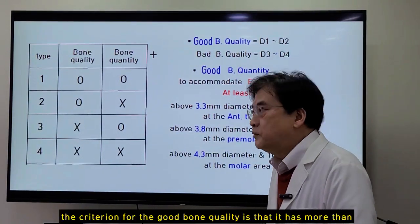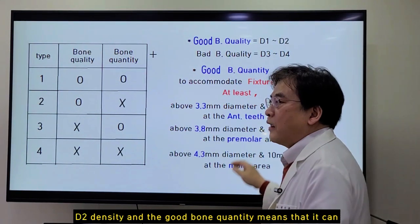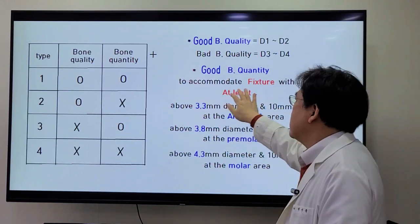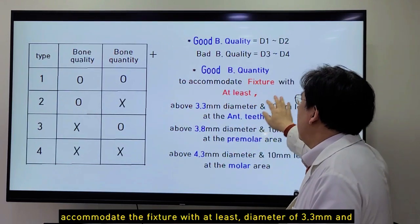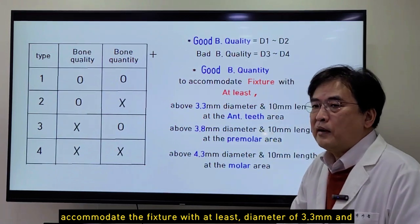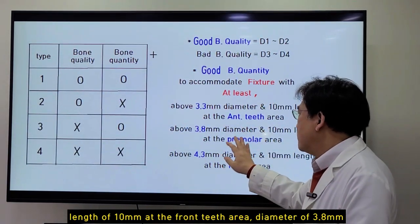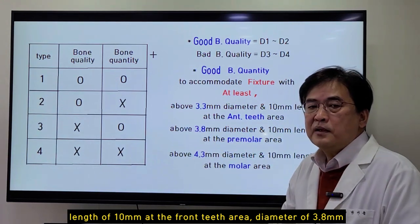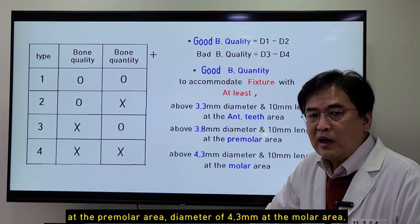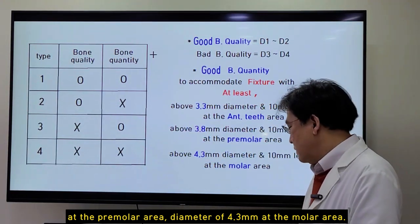The criterion for good bone quality is that it has more than D2 density, and good bone quantity means that it can accommodate the fixture with at least a diameter of 3.3 mm and length of 10 mm at the anterior area, diameter of 3.8 mm at the premolar area, and diameter of 4.3 mm at the molar area.